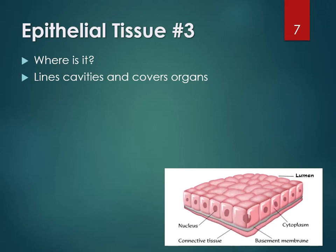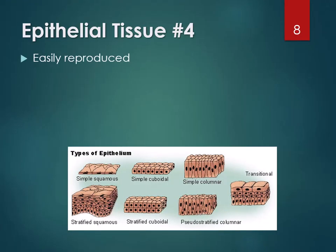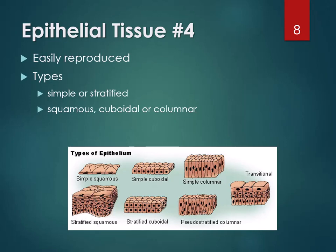On one side of epithelial tissue is always a space called a lumen, and it's attached to the tissues underneath via the basement membrane — also called the basal lamina in some cases. Epithelial cells are tightly packed together with no blood vessels within; blood vessels are underneath. When we shed skin cells, we don't bleed unless we reach all the way down to the tissue underneath. Epithelial tissue reproduces rapidly to replace itself as it wears out.